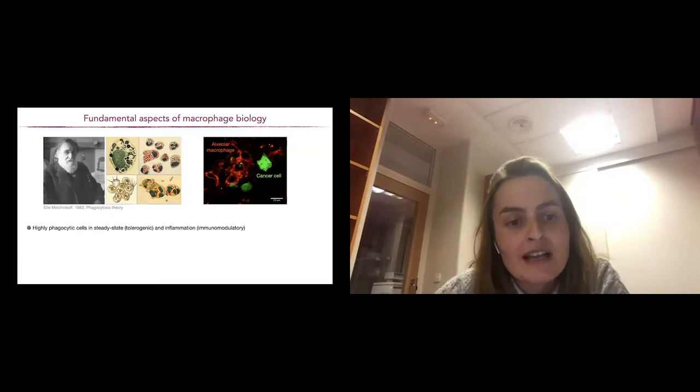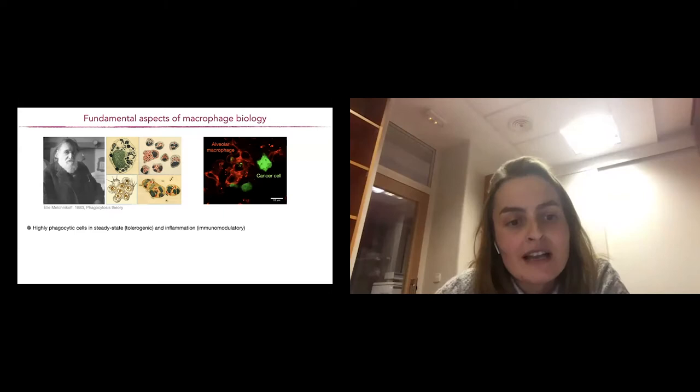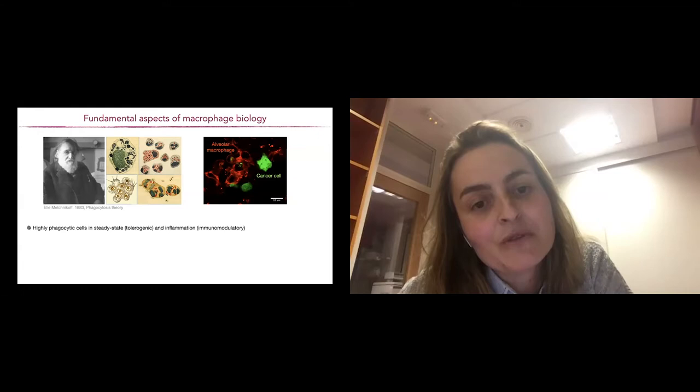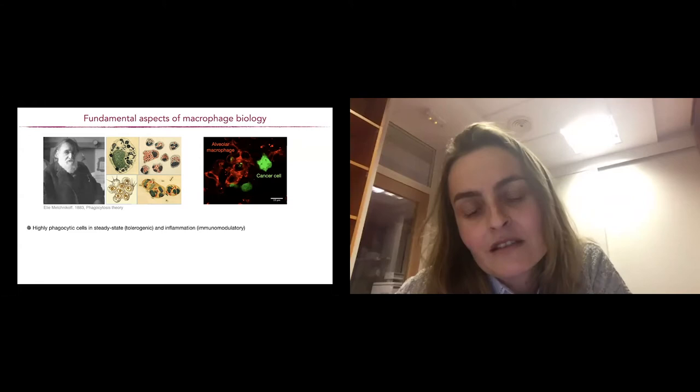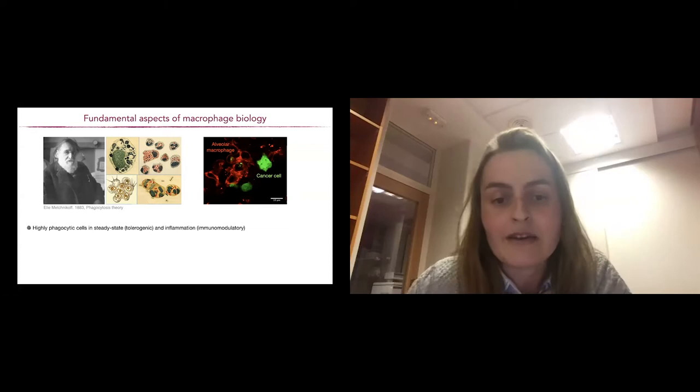As you may know, Elin Menikoff established, looking by a very rudimentary microscope, that macrophages are very important at phagocytosis. And one degree of plasticity of these cells is related to the food that they eat. They might eat apoptotic neutrophils in the steady state that die on a daily basis and turn on a program of tolerogenic signals.